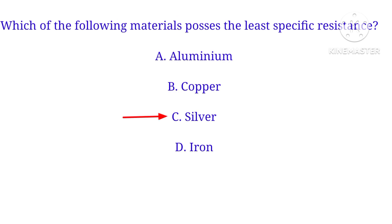Which of the following materials has the least specific resistance? The correct answer is silver. Silver has the least specific resistance among the given options.